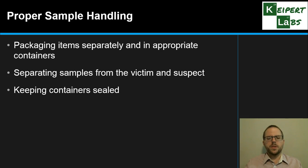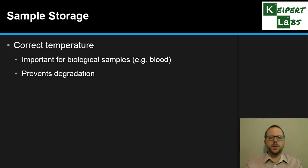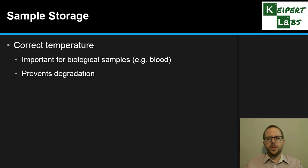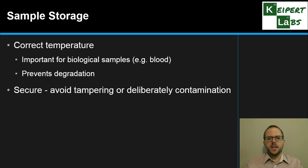Making sure that containers are sealed, so there's no chance that anything could get in that way, especially with trace evidence where often very little material is involved. So looking at sample storage - storing things at the correct temperature, especially for biological samples like blood, because we don't want any degradation. We don't want that sample to break down over time or to spoil. It also needs to be secure so that there's no chance of tampering or any deliberate contamination.